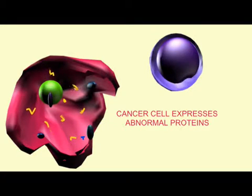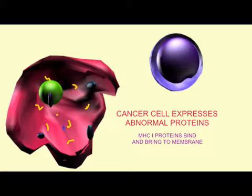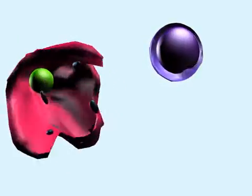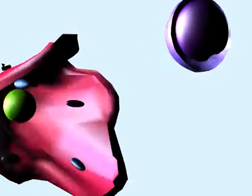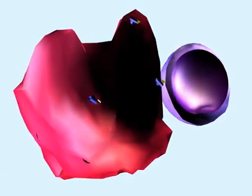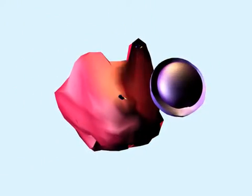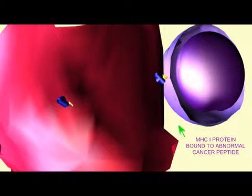A cytotoxic T-cell has the ability to recognize body cells gone bad. A cancer cell may express abnormal peptides, and as MHC proteins bind intracellular peptides and carry them to the cell surface, a T-cell might be able to recognize a cancer cell by the abnormal antigens it presents attached to its MHC-1 proteins.